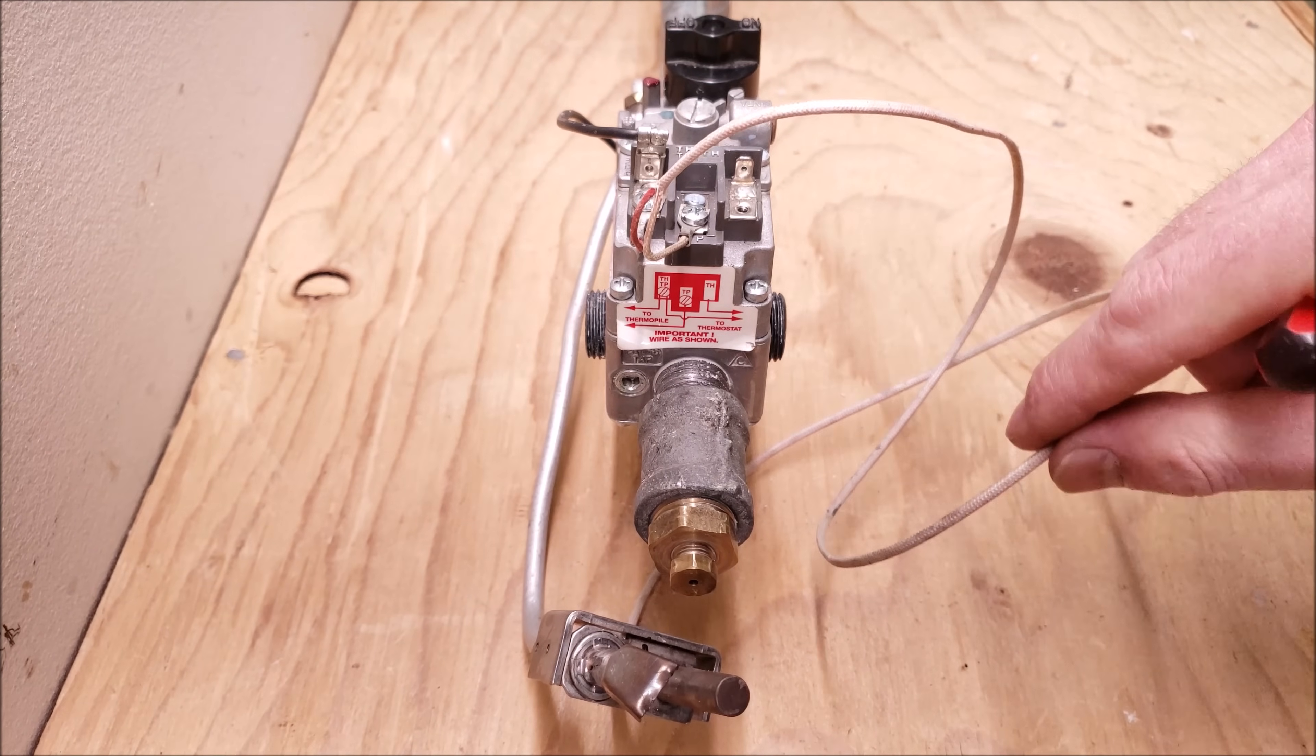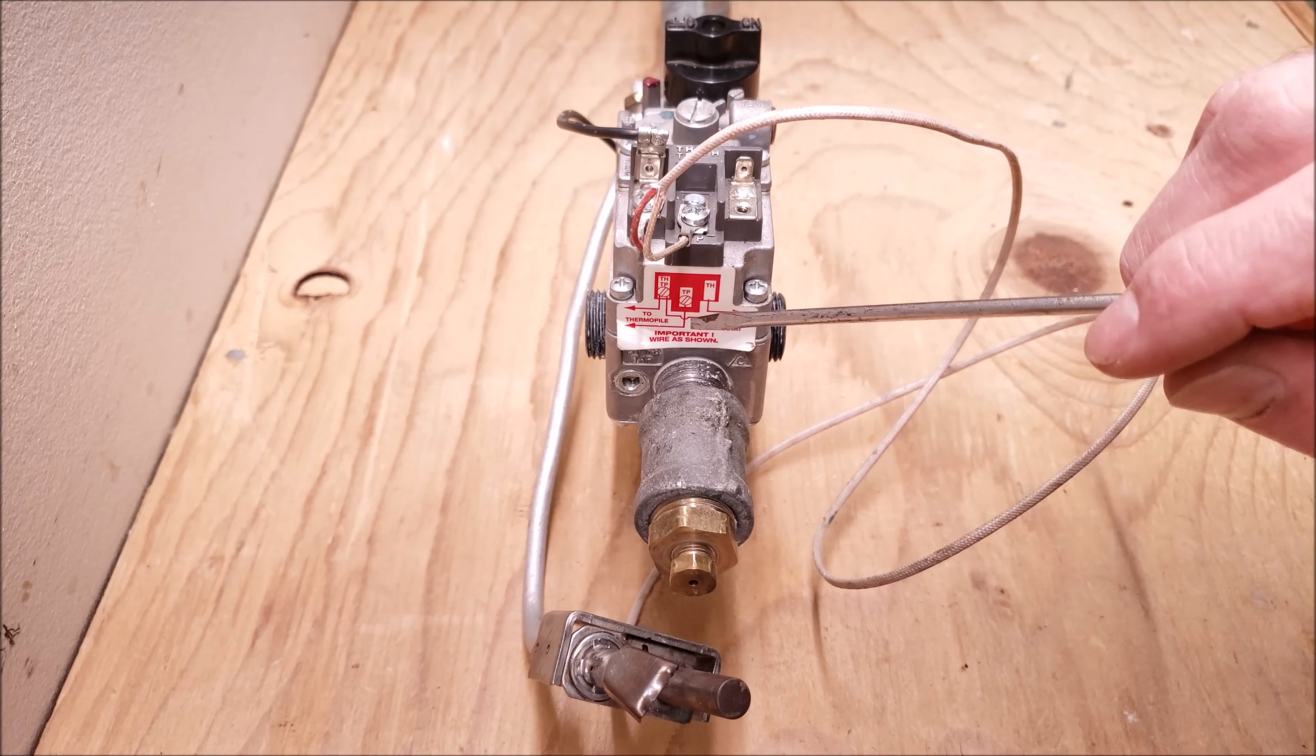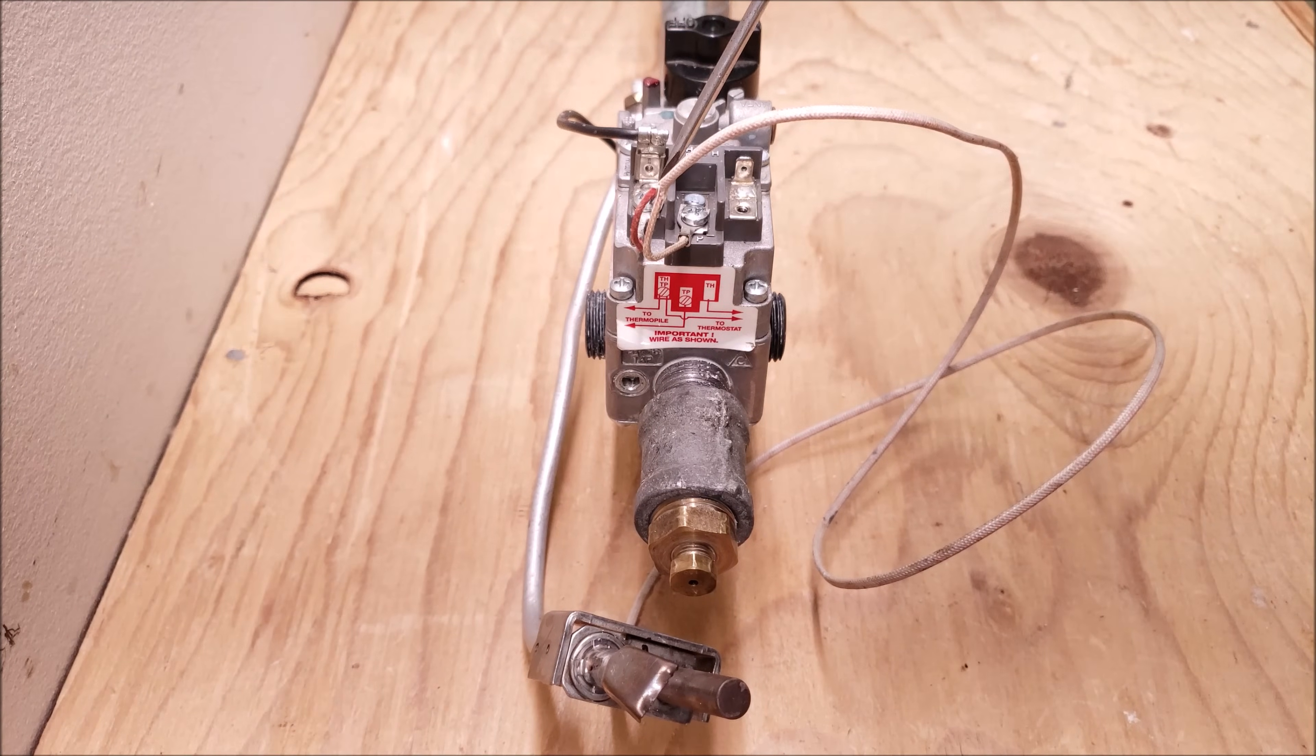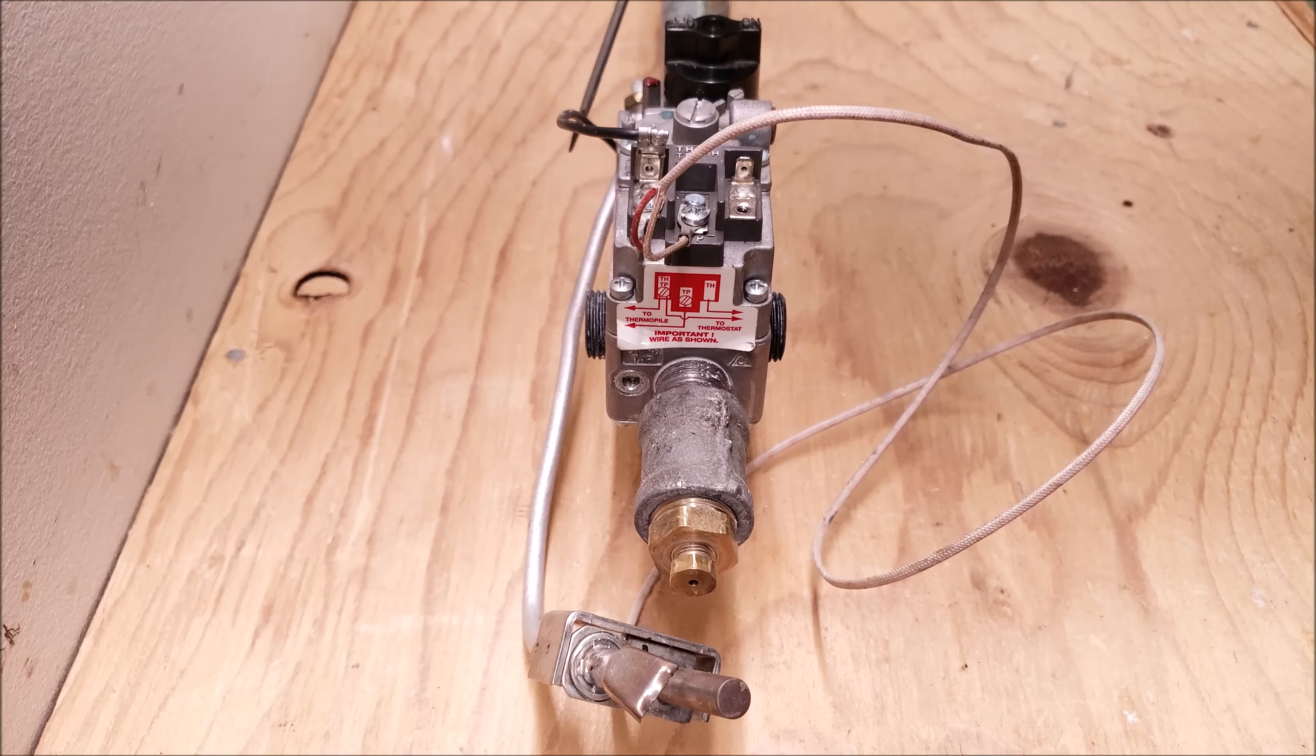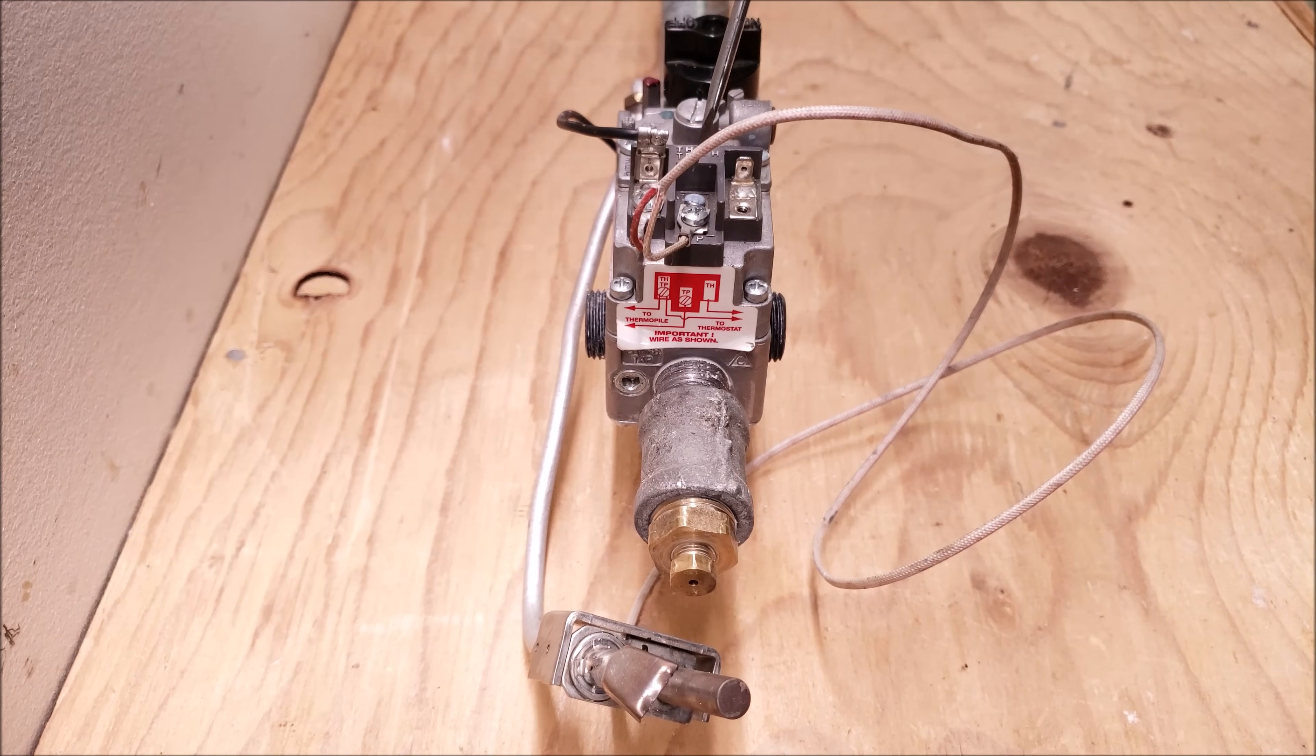So you see we have our thermopile actually wired into the gas valve and it's wired into the pilot solenoid valve. So we have our power coming into the THTP on the red wire right here and that gets connected to this wire and it runs over to the pilot solenoid and it finds its way back through the TP.